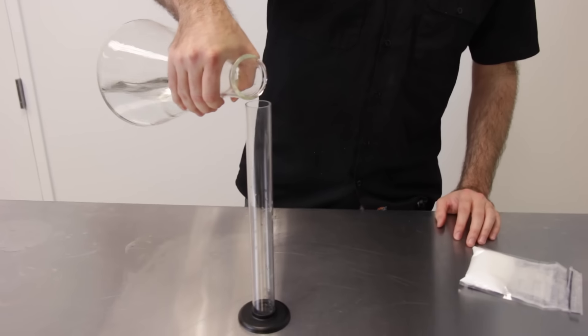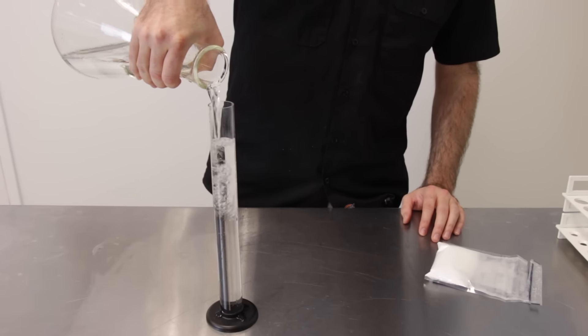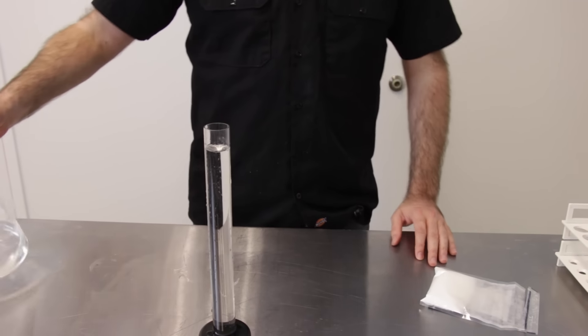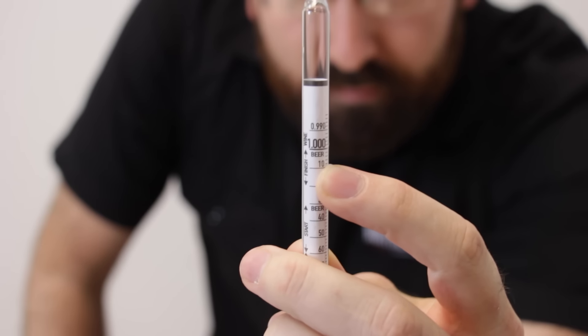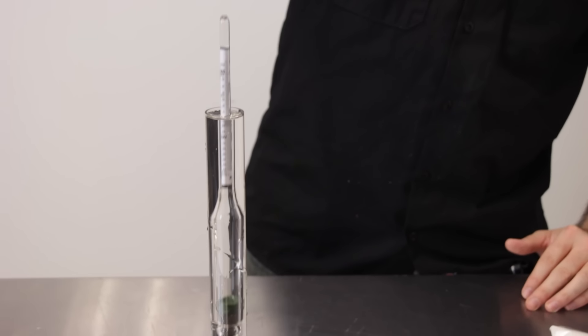So to show you what I'm talking about, I'm going to take some regular old Minnesota tap water and dump it into this test jar. If this tap water is clean and pure, it should read 1.000 on our hydrometer right here. And she floats at 1.000.